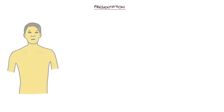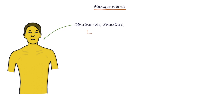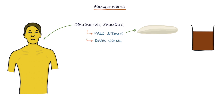Let's talk about the presentation. Obstructive jaundice is the key presenting feature to remember. Obstructive jaundice is associated with pale stools, dark urine, and generalised itching.